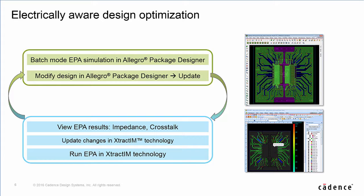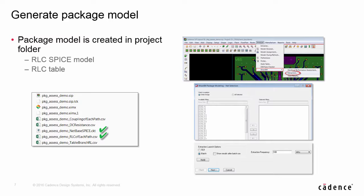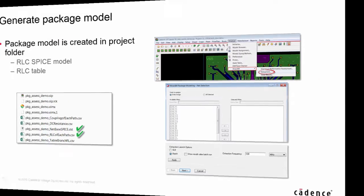Zooming into those red color areas will bring up the corresponding location in APD. In the next iteration, designers modify the design in APD, save the design, and rerun the simulation. The design changes will be automatically updated to E-Track IM, so the design can be optimized very quickly. Layout designers can also generate an RLC report from APD, including a SPICE model and RLC table. With just a few parameter inputs, you are all set to generate a package model. Next, we will demo E-Track IM access from Allegro Package Designer for a flip-chip package design.